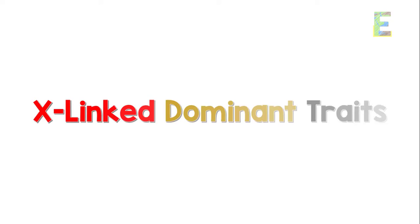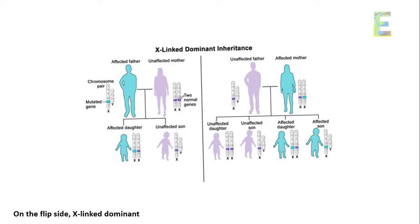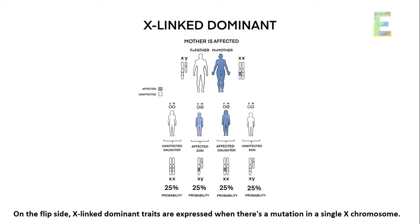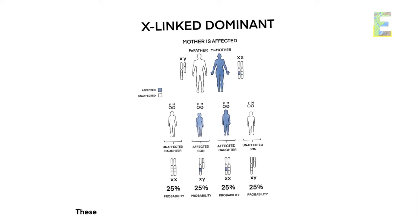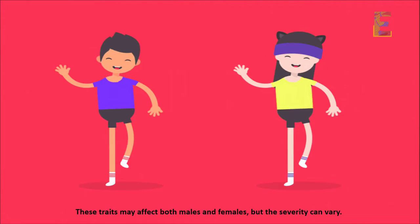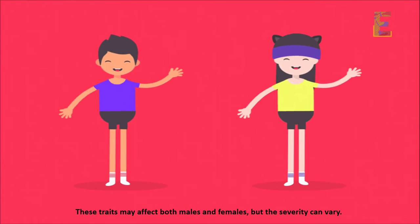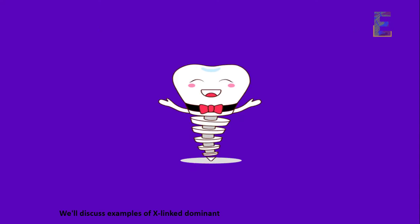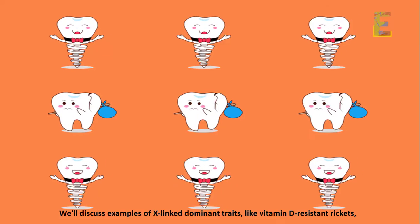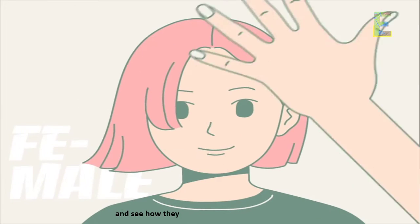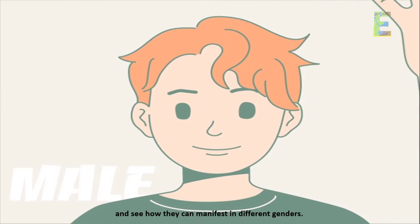X-linked dominant traits: on the flip side, X-linked dominant traits are expressed when there's a mutation in a single X chromosome. These traits may affect both males and females, but the severity can vary. We'll discuss examples of X-linked dominant traits, like vitamin D-resistant rickets, and see how they can manifest in different genders.